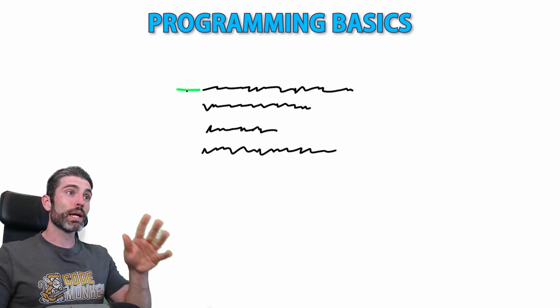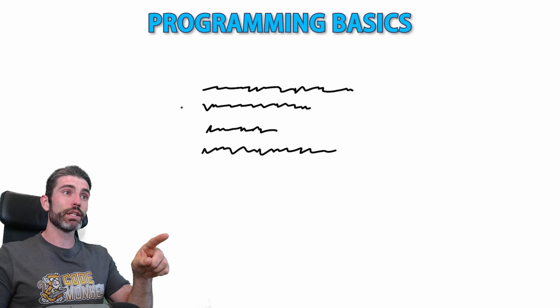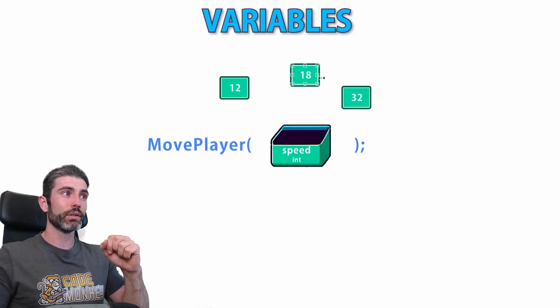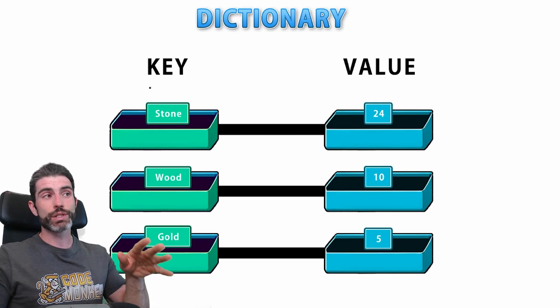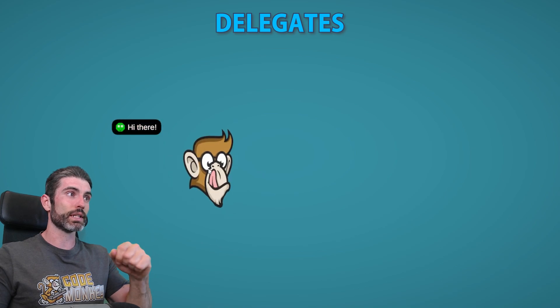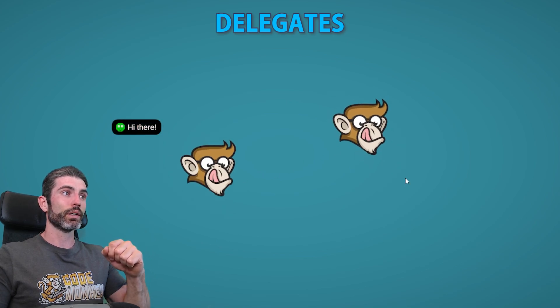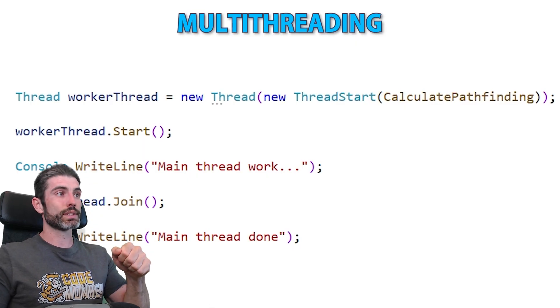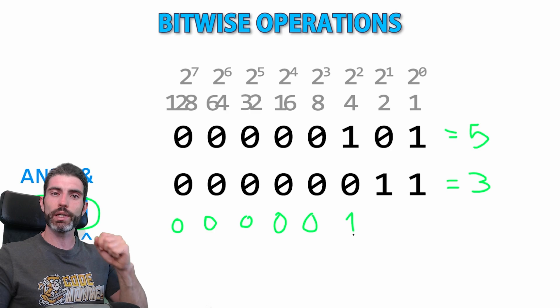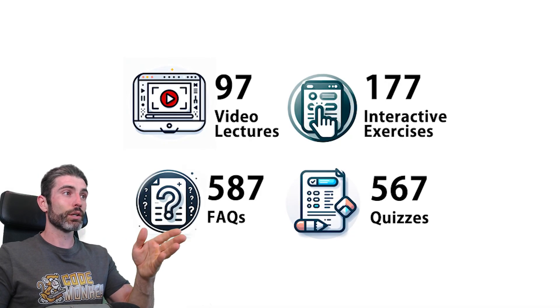It starts from the absolute basics, like teaching how exactly code runs line by line and what a variable is, then teaches some more intermediate topics like events and interfaces, and now finally the advanced section, teaching lots of very interesting C Sharp features that you might not know about.